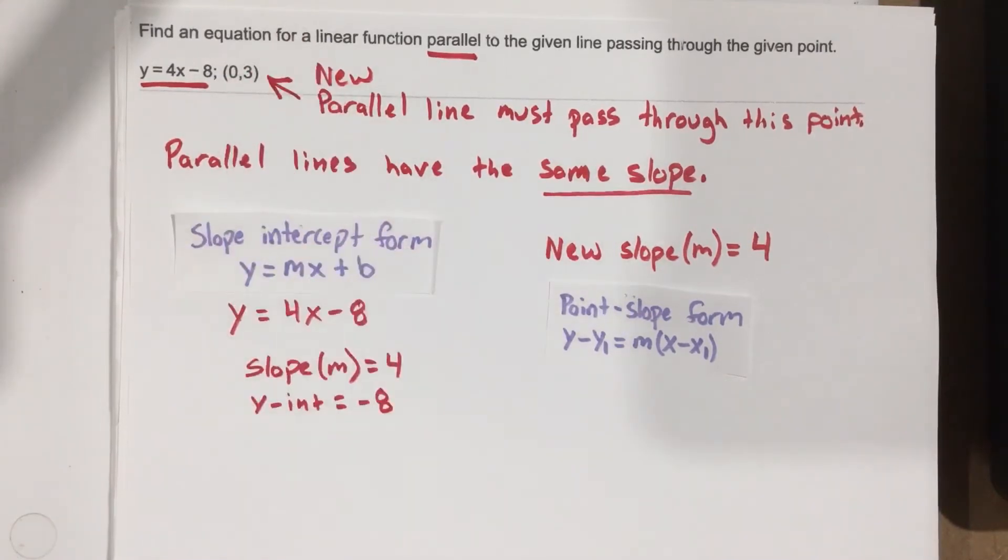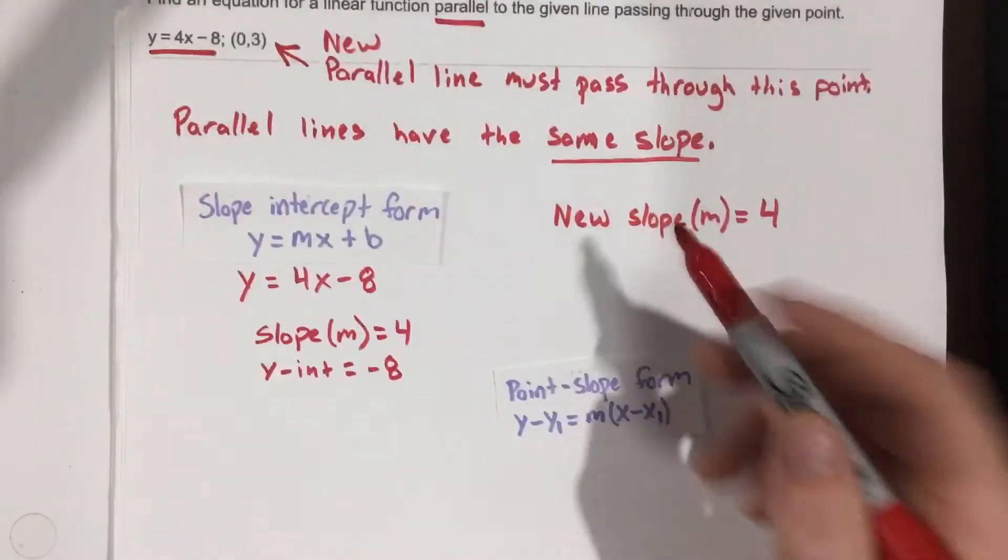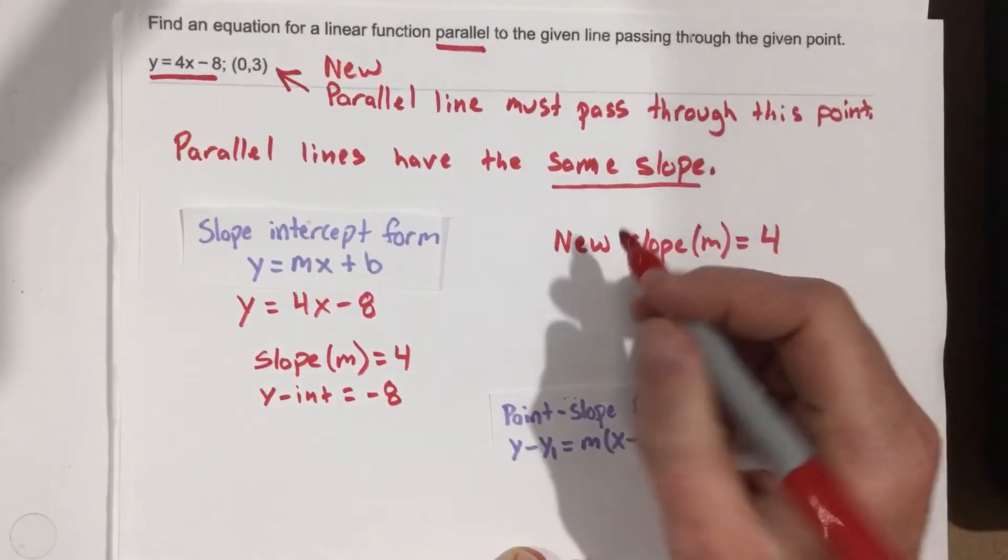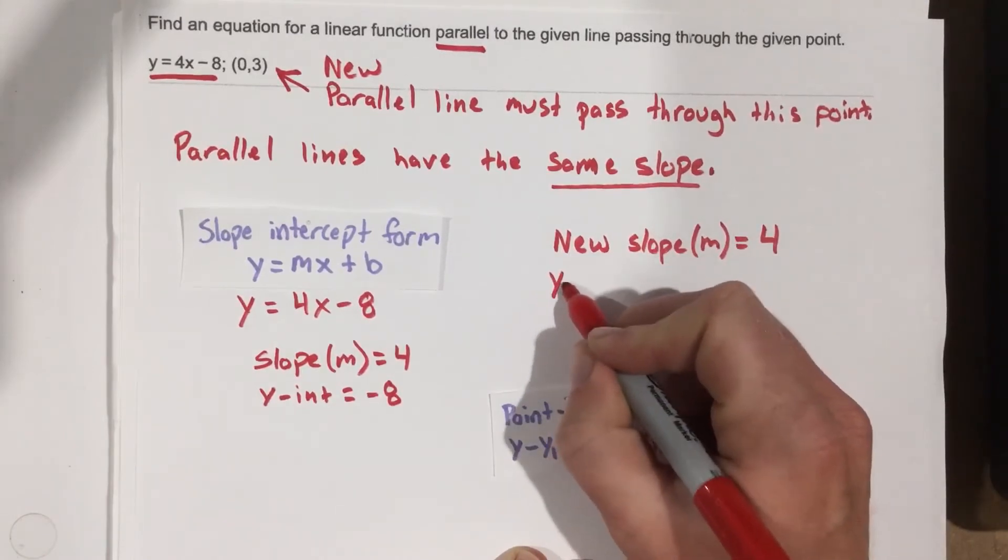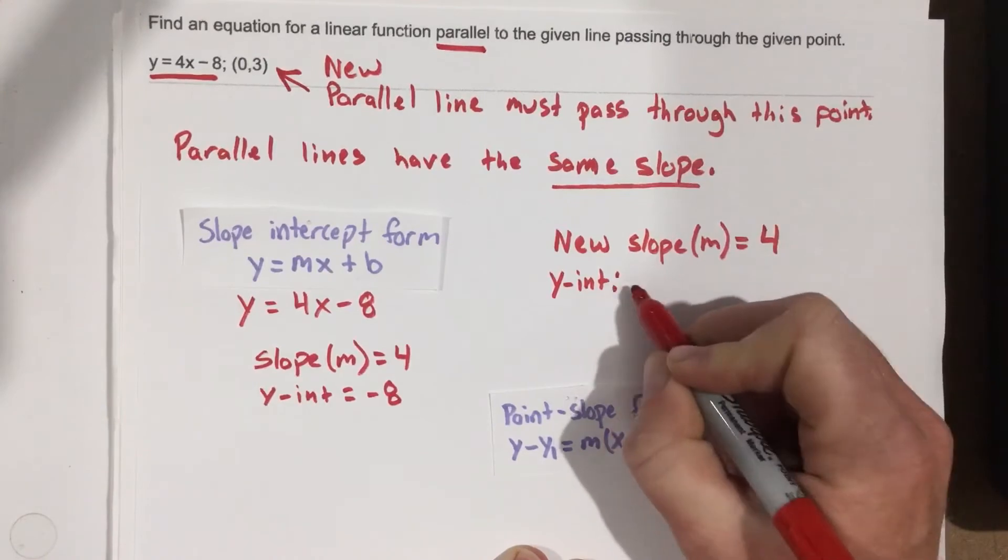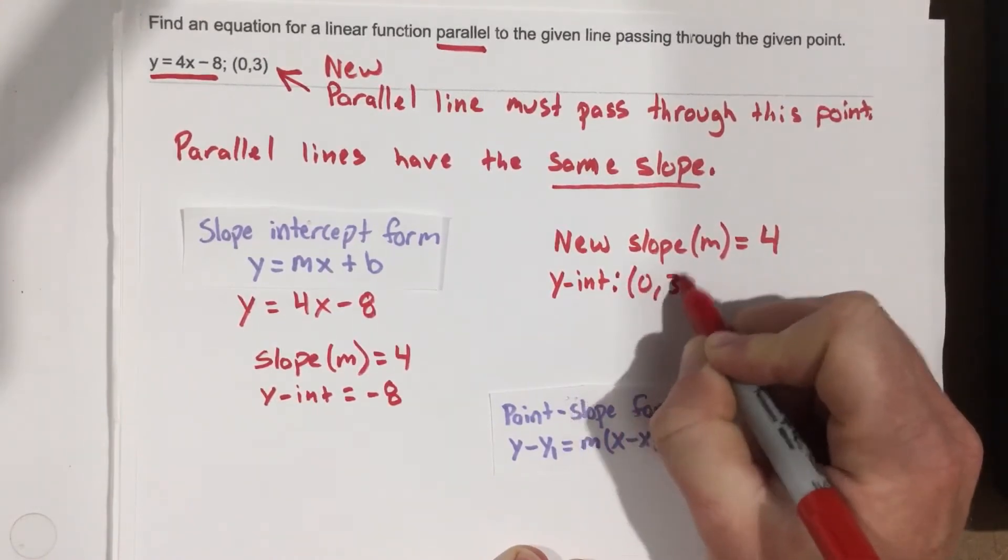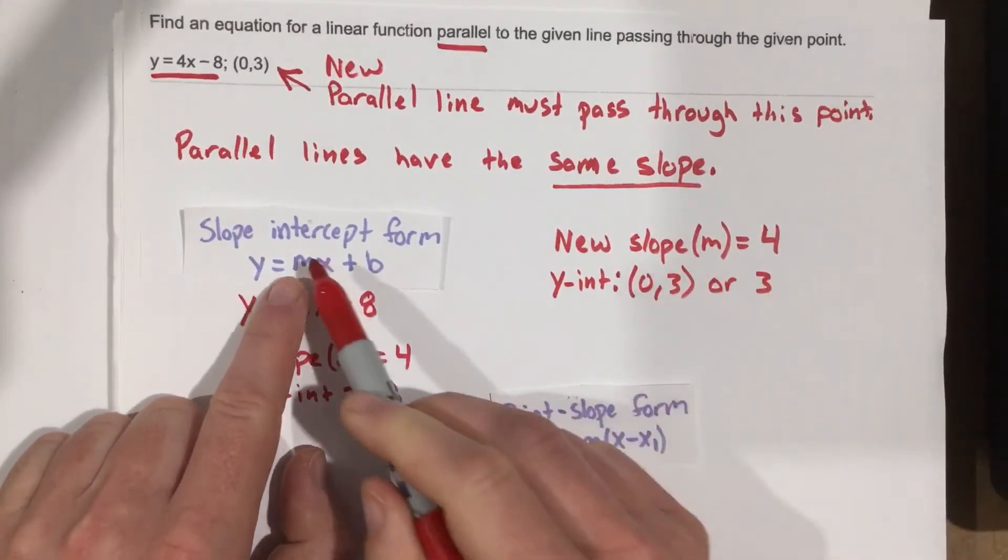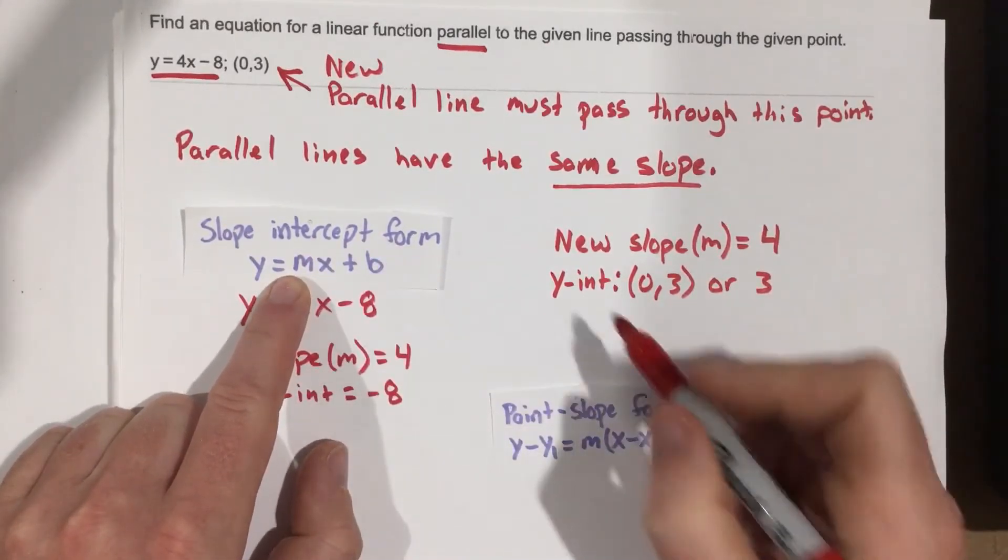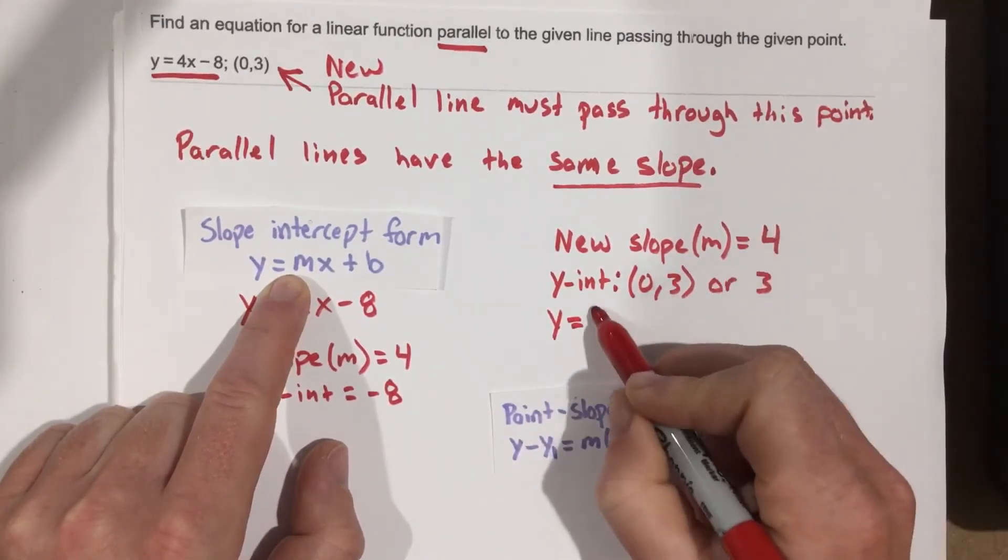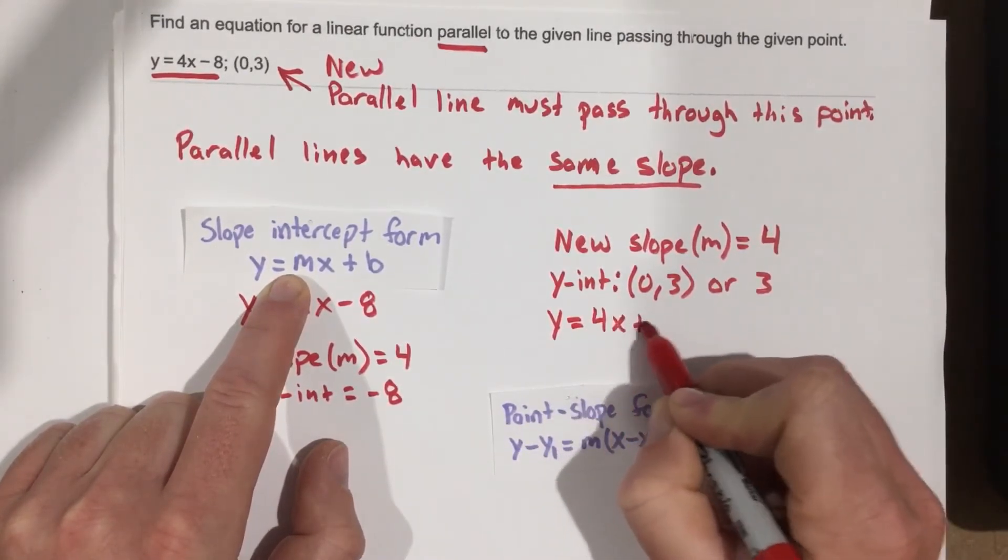So there's two ways to do this problem. Now, because we know that is 0, 3, and the y-intercept then, because x is 0, we can say the y-intercept is 0, 3, or just 3, we could write this equation right away using slope-intercept form. So we're going to say that this is y equals 4x plus 3.